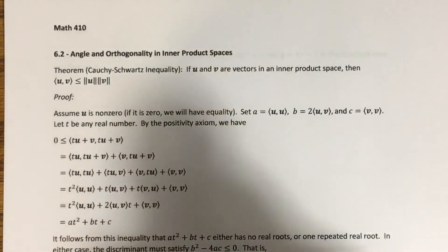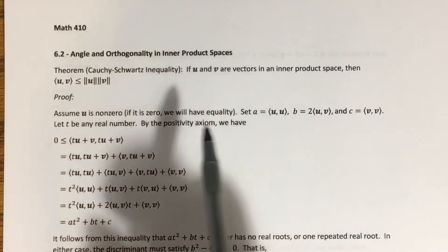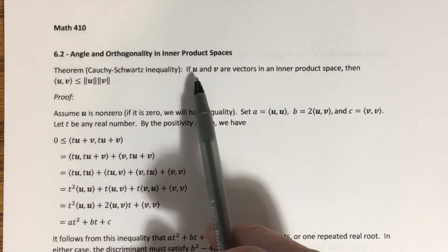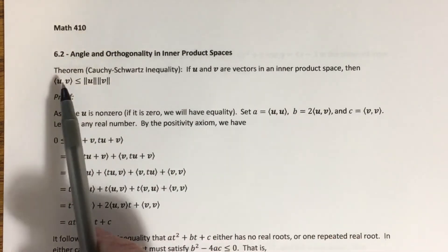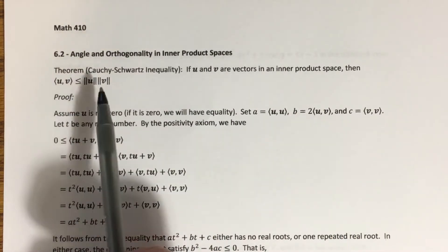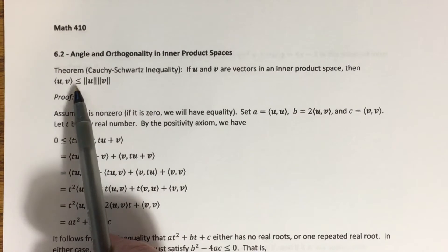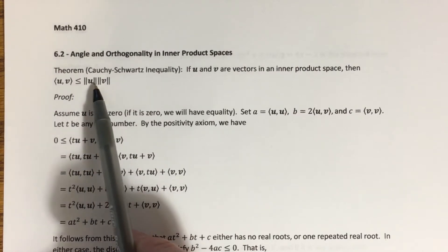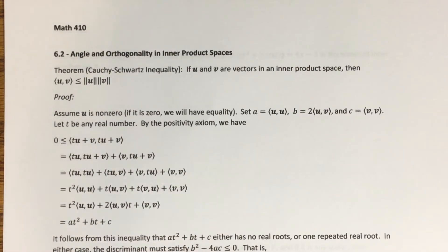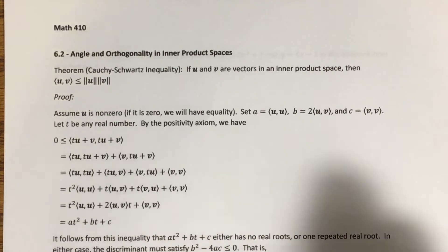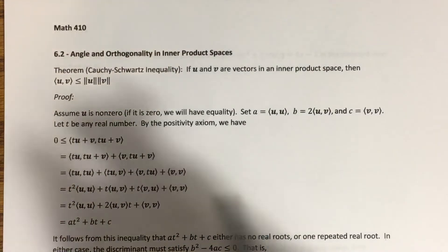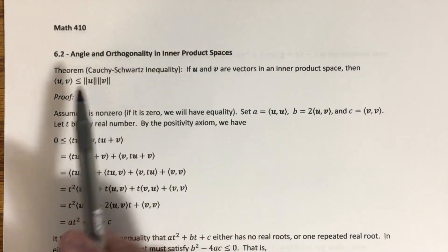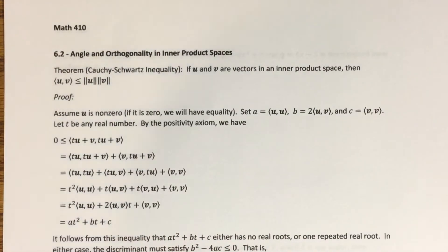We're going to be working in a real inner product space. If we have two vectors u and v in this inner product space, then the inner product of u with v is always less than or equal to the product of the norms of u and v. We'll see after proving this why we need this inequality to be true in order to generalize the idea of angle between two vectors.